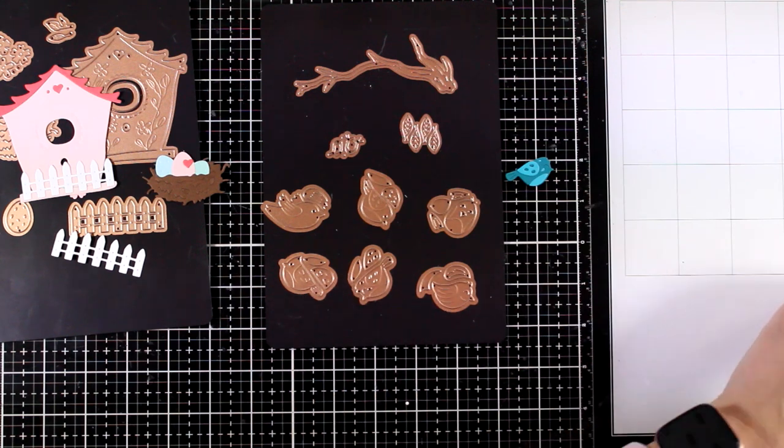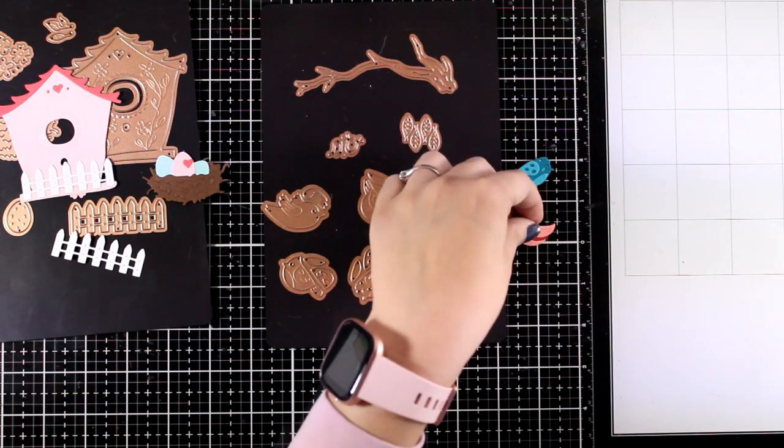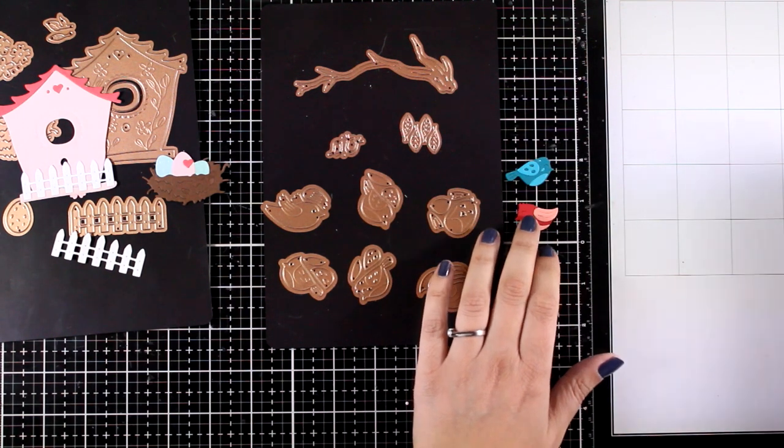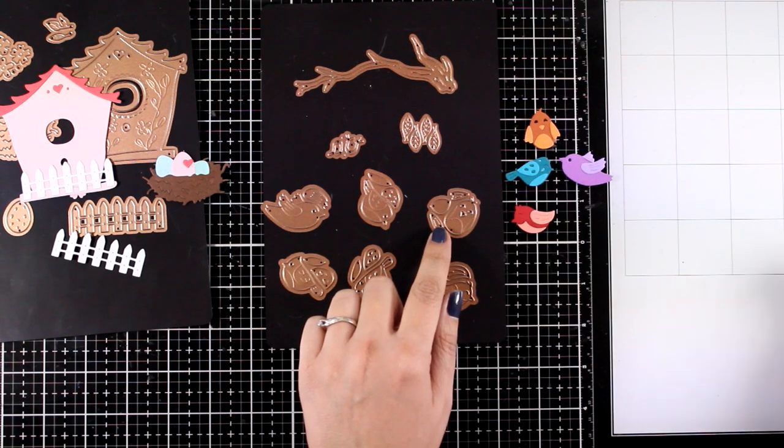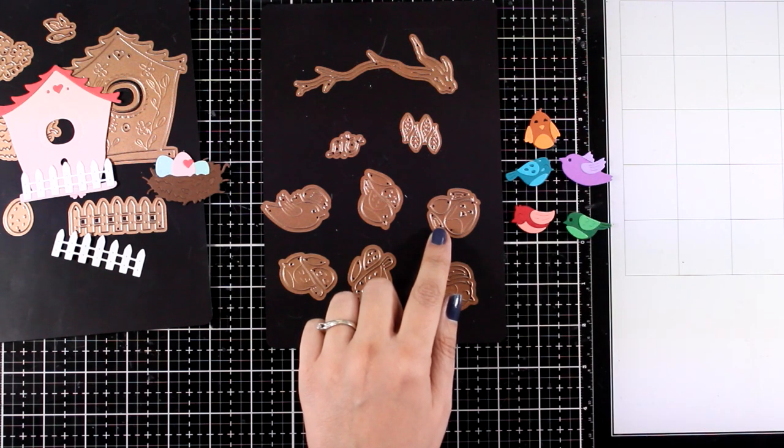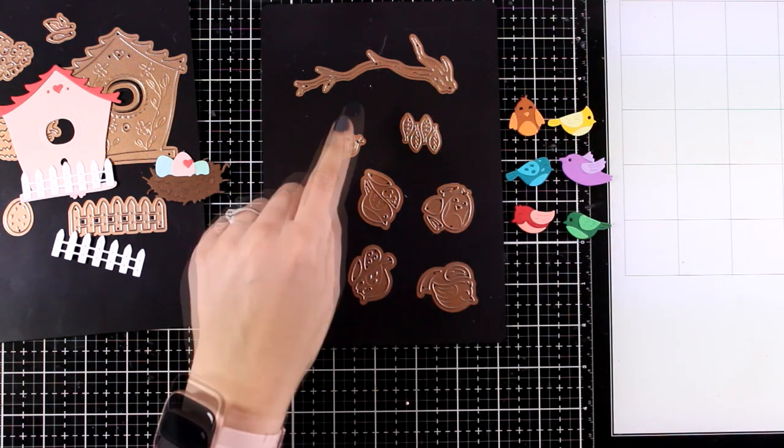Now when it gets to the set with the birdies, you will get six different designs of birds, all in different positions. Some of them are looking on the left, on the right, they are flying, so you can play around with them and create your little scenes.